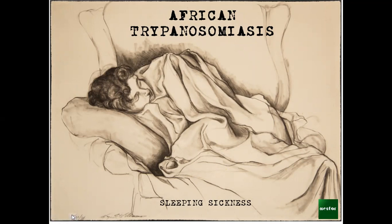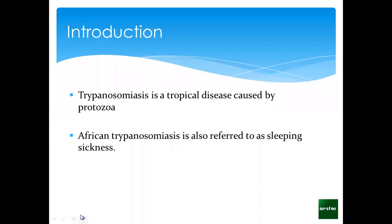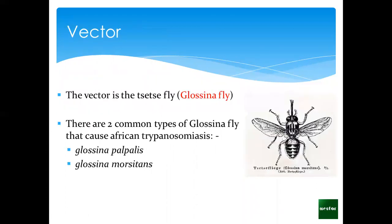To basically introduce ourselves to the concept: African trypanosomiasis is a tropical disease caused by a protozoa — the trypanosomes — which are parasites normally found in blood. African trypanosomiasis is also commonly known as sleeping sickness. Looking at the vector itself, because these are vector-borne diseases, the vector is the tsetse fly, commonly known as the Glossina fly, because that is the scientific name.